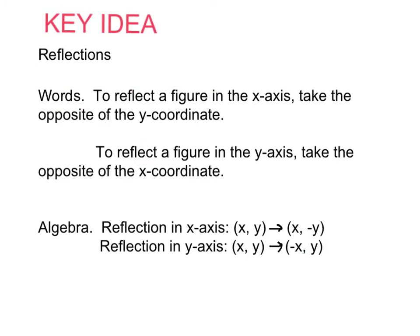Here's your key idea — write this down. To reflect a figure in the x-axis, take the opposite of the y-coordinate. So if you have a point (x, y), the reflected point is (x, −y). For example, a point at (5, 2) becomes (5, −2), which means it flips down over the x-axis.